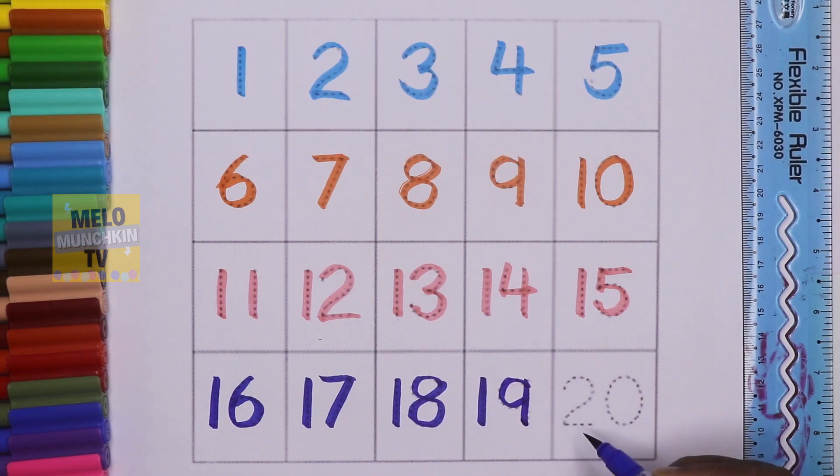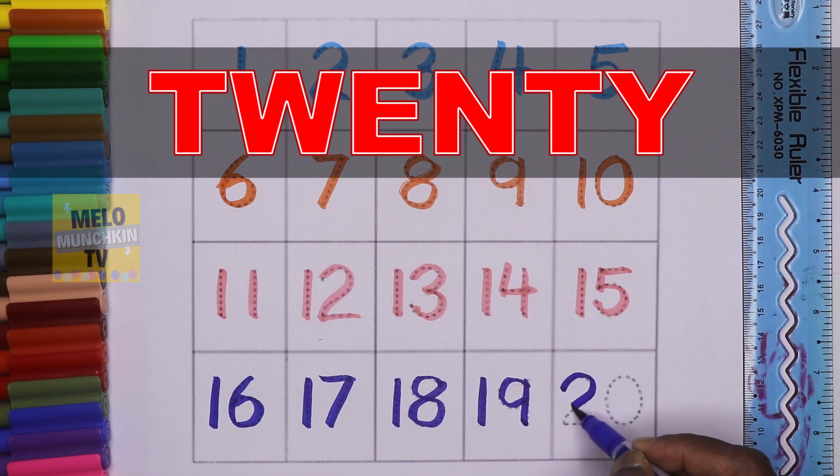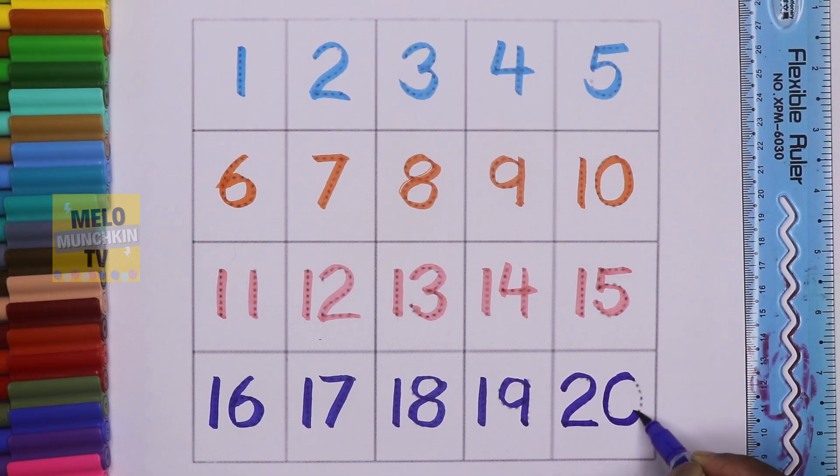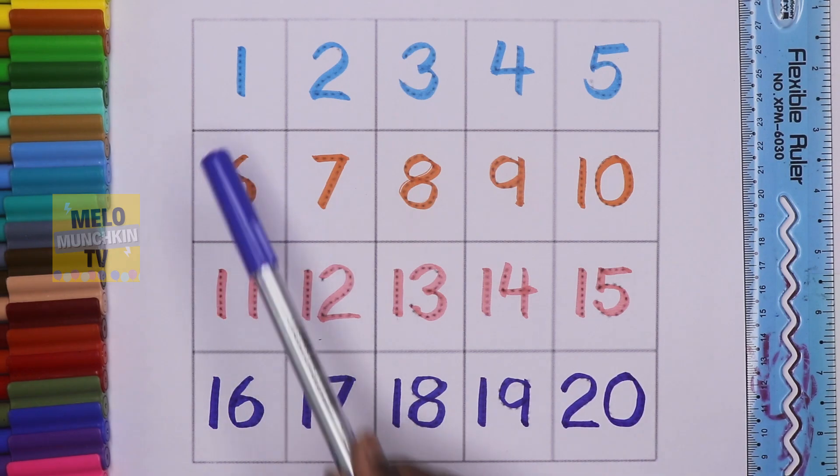This is number 20, T-W-E-N-T-Y, 20. So we have completed our numbers from 1 to 20.